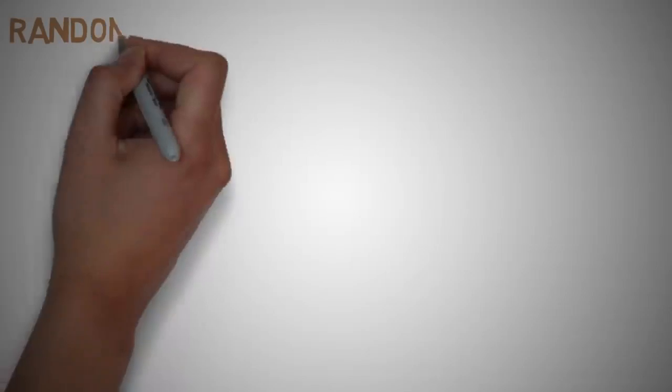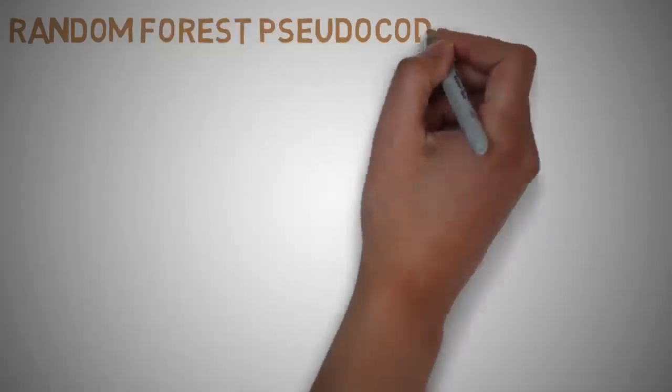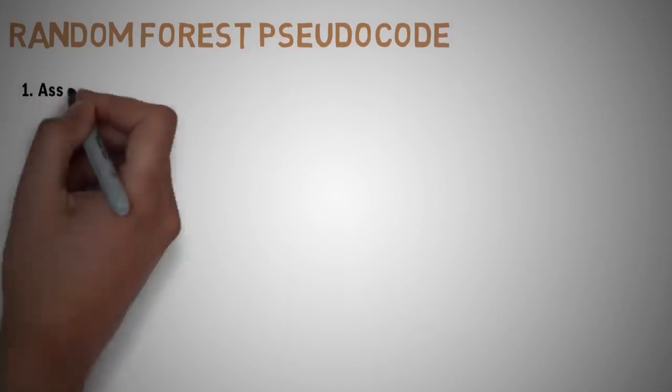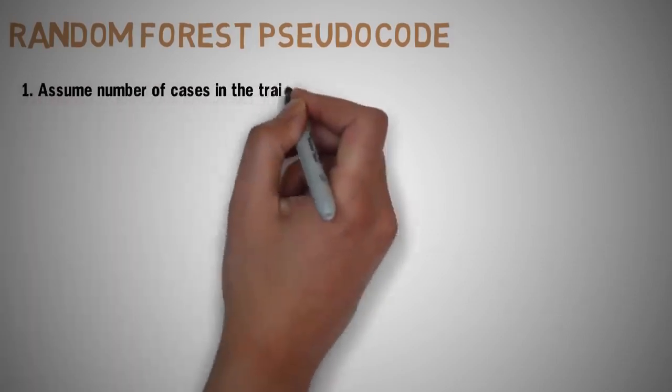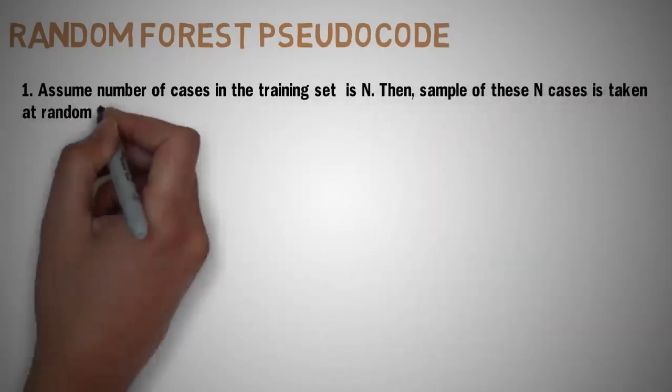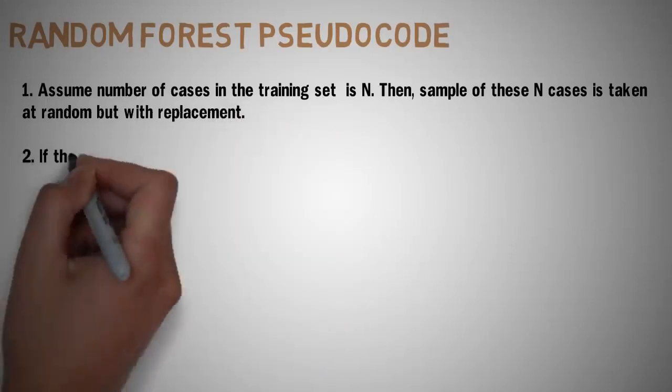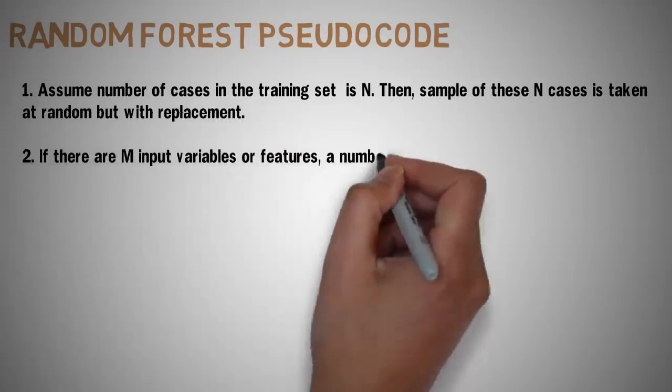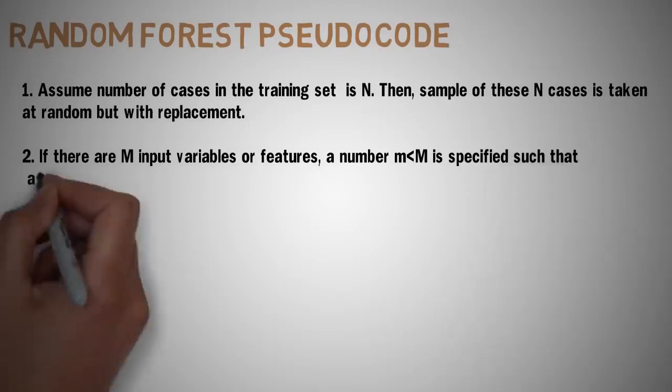Let's take a look at the random forest pseudocode and how it works. Each tree is planted and grown as follows: assume a number of cases in the training set is n. Then the sample of these n cases is taken at random but with replacement. The sample will be the training set for growing the tree.